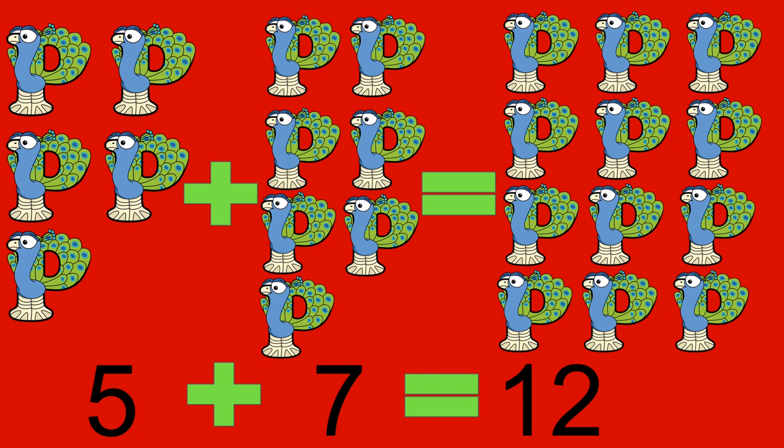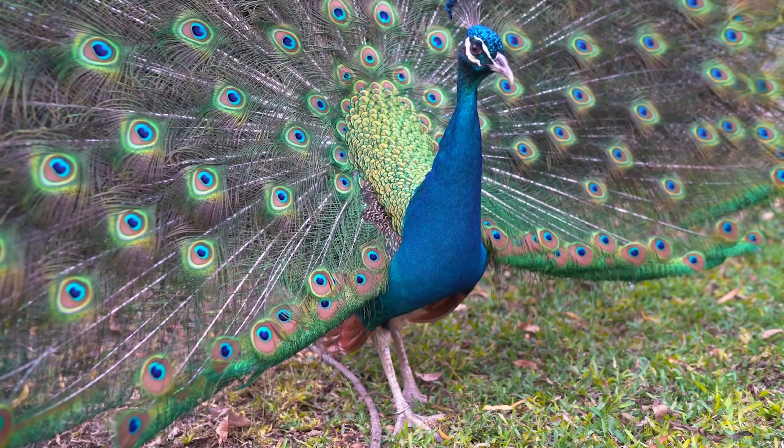5 peacocks plus 7 peacocks equals 12 peacocks. 5 plus 7 equals 12. Peacock.